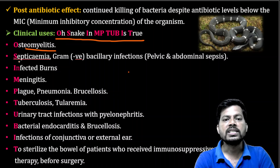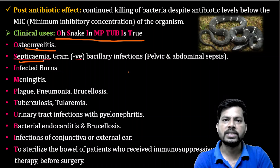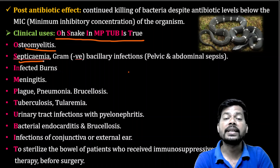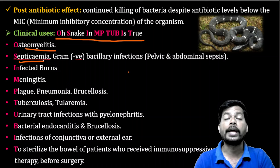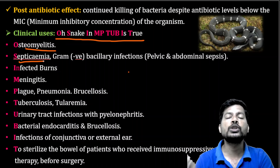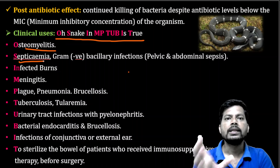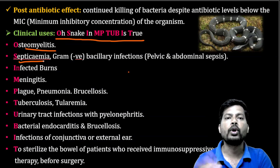S stands for Septicemia, which is like blood poisoning — sepsis of the blood caused by bacterial exotoxins and endotoxins. Exotoxins and endotoxins are bacterial products; when they are released into the blood, they cause toxicity, sepsis, and blood poisoning.